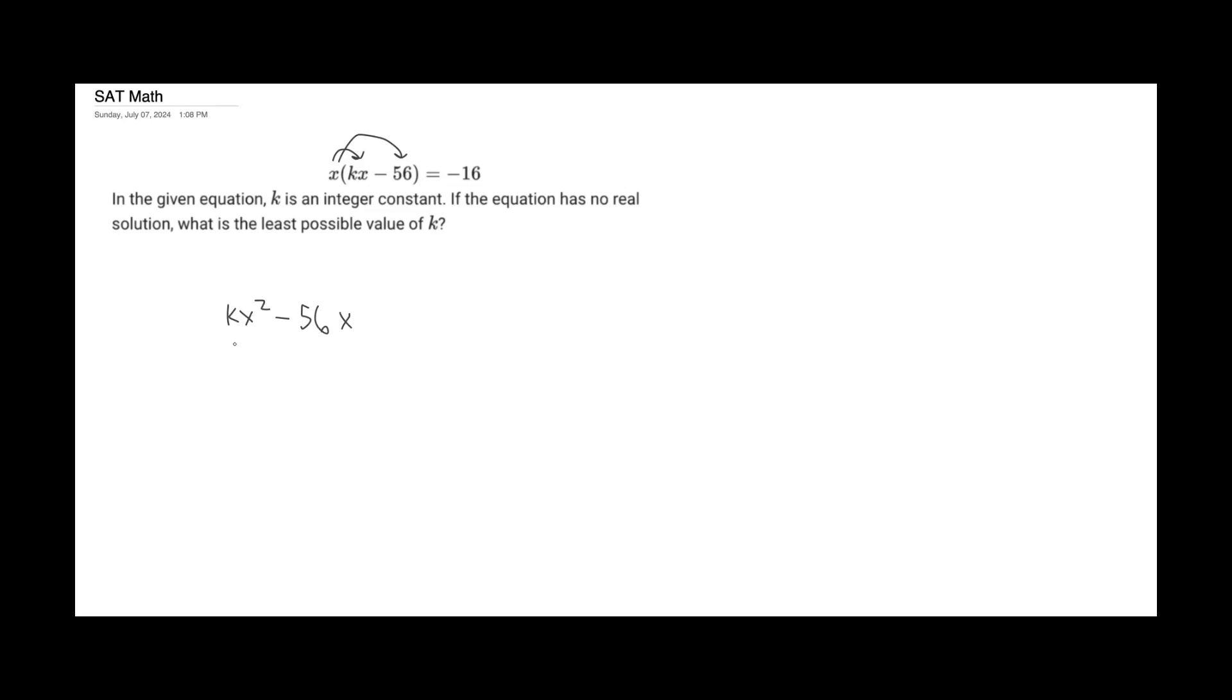56x equals negative 16. And you can see here, that's actually going to be a quadratic equation. So we can add 16 on both sides when we set it equal. We can just skip that step and put plus 16.